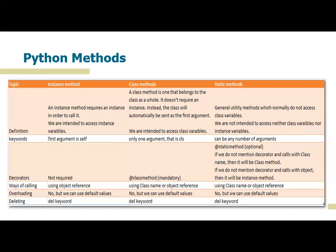If you don't mention the '@staticmethod' decorator and call with the class name, it will act as a class method. If you call with the object, it will act as an instance method. Instance methods are called using the object reference. Class methods can be called using the class name or object reference, but it is recommended to use the class name. For static methods, you can use either the class name or object reference — it does not matter.